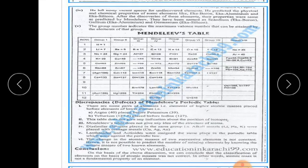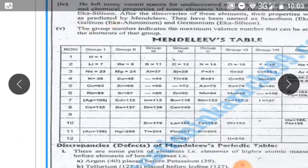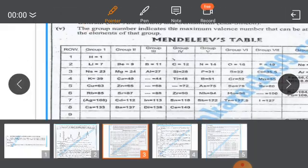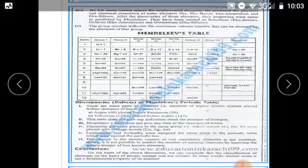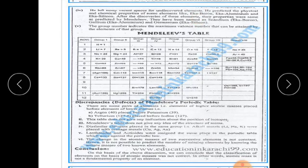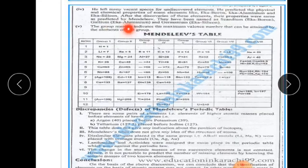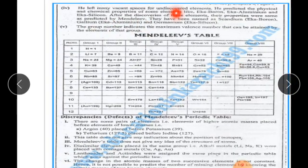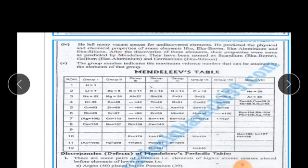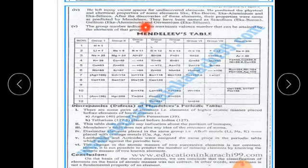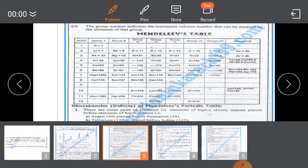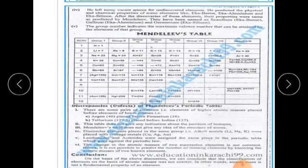He left many vacant spaces for undiscovered elements and predicted the physical and chemical properties of some elements like eka-silicon. After the discovery of these elements, their properties were found to be the same as Mendeleev had predicted.